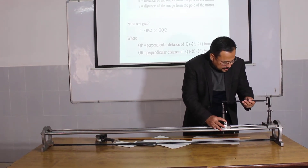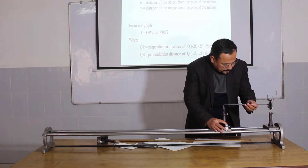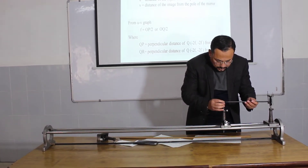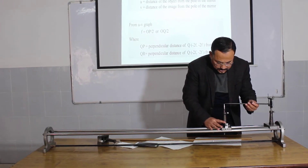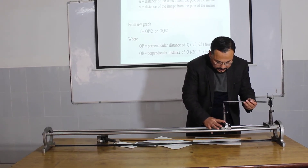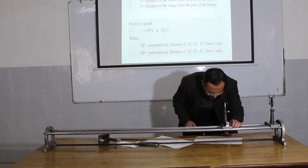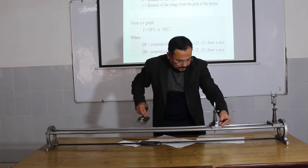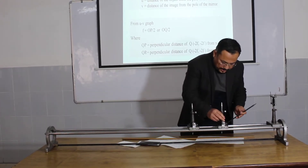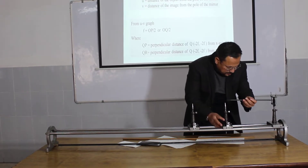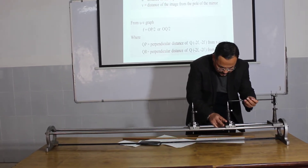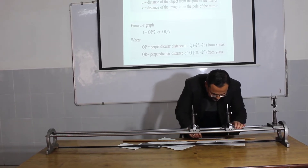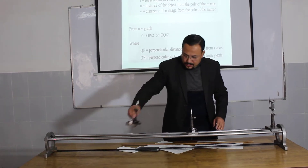Then you adjust the object pin in between the mirror and take the reading from here — this is 32.2 centimeters. This one is the object pin and the other is the image pin. Adjust the image pin in between and again take the reading here — it is again 32.2 centimeters.